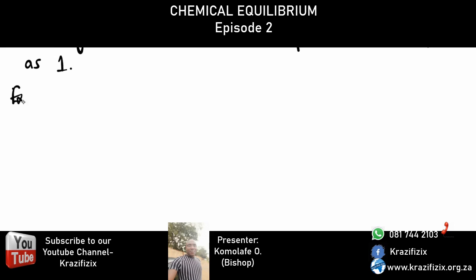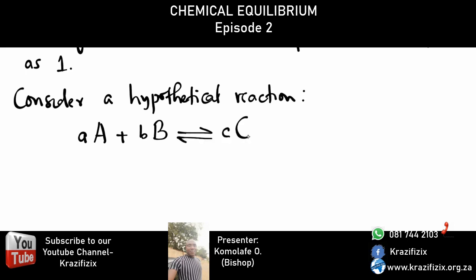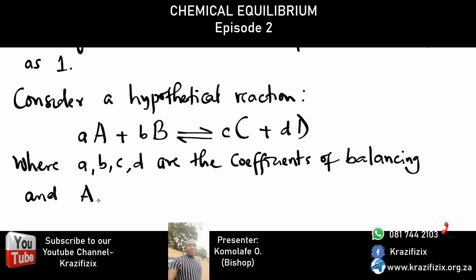Consider a hypothetical reaction: small a, capital A, plus small b, capital B, with a reversible arrow, giving small c, capital C, plus small d, capital D. Here, the small letters a, b, c, d are the coefficients of balancing — basically integers — and capital A, B, C, D are the chemical reagents and products.